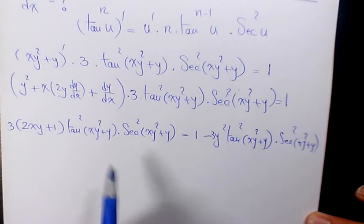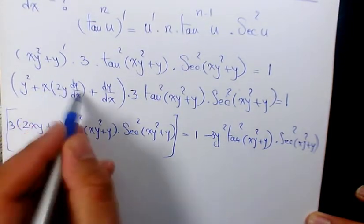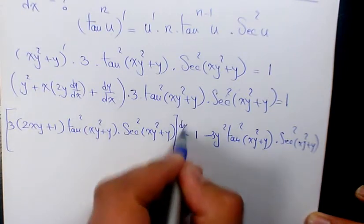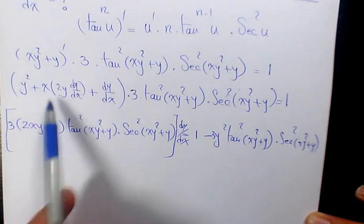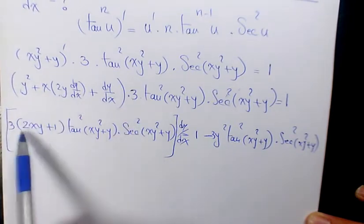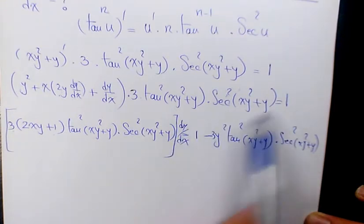Now, the thing that I forgot to write, this part has to be multiplied by dy/dx, because I factor that one. That's why we have 3 times (2xy + 1) times this part and this part equals 1 minus this part times these things here.